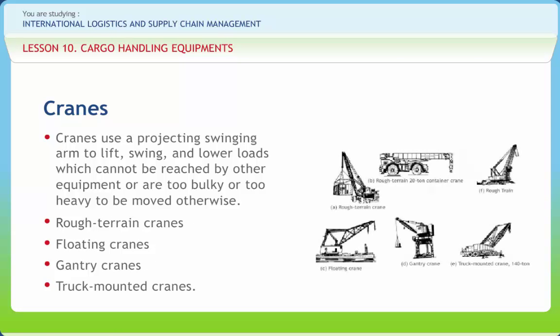Rough terrain cranes are designed for operating in rough terrain. One rough terrain crane with a 20-ton capacity and a 30-foot boom is equipped with an earth-moving blade for improving beach-working area or making its own path in unimproved terrain. Floating cranes are mounted on barges and vary in lifting capacity; some commercial cranes have capacities up to 240 long tons.